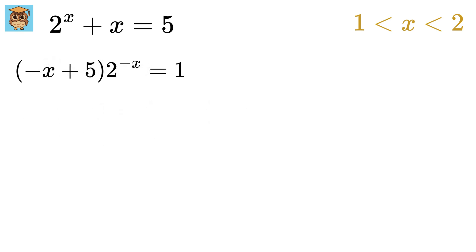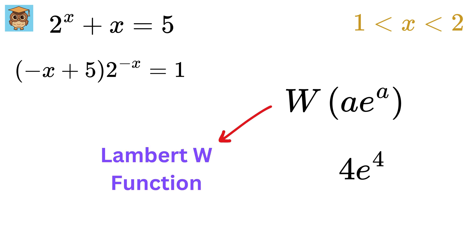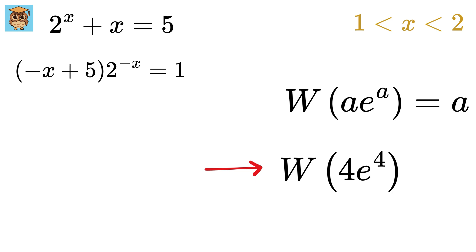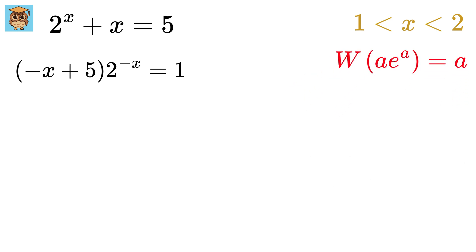Now suppose we have a function of the form a times e to the power of a. And this a can be any expression. It doesn't matter what we write here. For example, we can write here 4 times e to the power 4. And now if we apply a W function, which is called Lambert W function, on this expression, we get the result as a itself. So if we apply this W function here, the result will be, yeah, you guessed it right, it will be 4. Amazing.